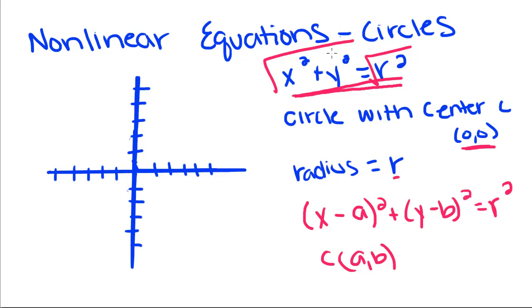Now we don't have an actual number for r, but what if I told you that x² plus y² is equal to 4? We would take the square root of 4 to find out what r equals. So r equals 2.